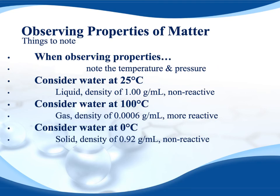One last quick note: when observing properties, you should note the temperature and pressure that you're observing at. For example, water at 25°C is a liquid with a density of 1 g/mL and is generally non-reactive. Water at 100°C is a gas with significantly lower density and is a lot more reactive. Water at 0°C is a solid with a density of 0.92 g/mL. So properties differ based on temperature, even though the substance is the same in all three cases. Whenever you make observations, you should know what temperature that's occurring at.